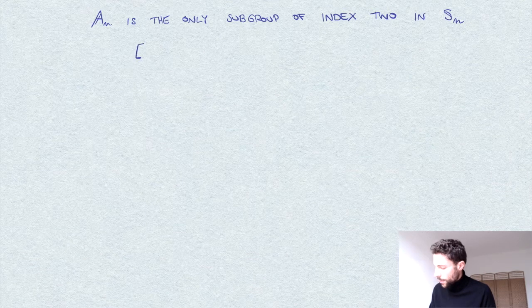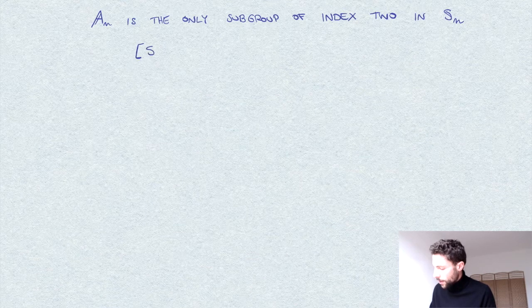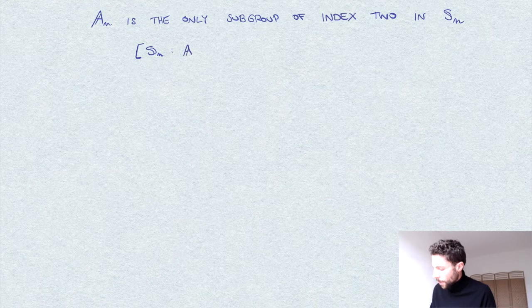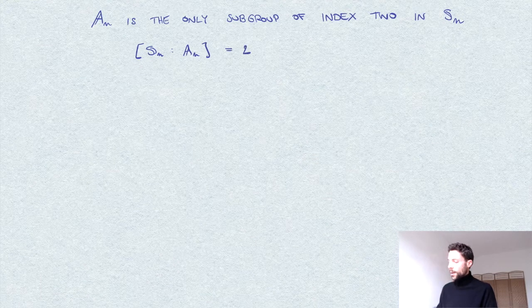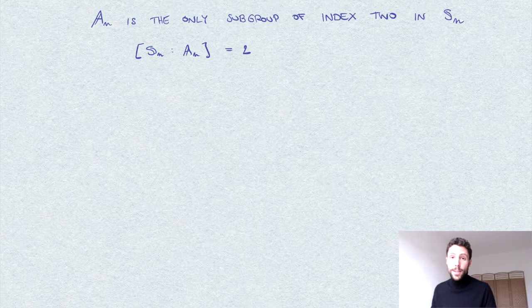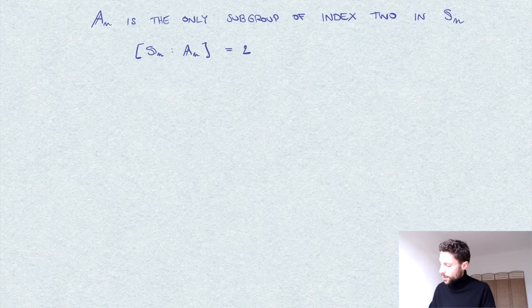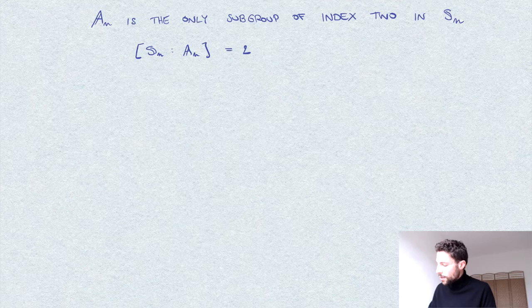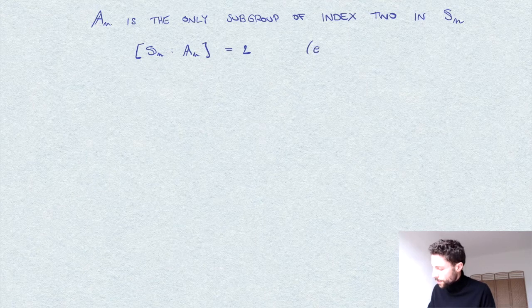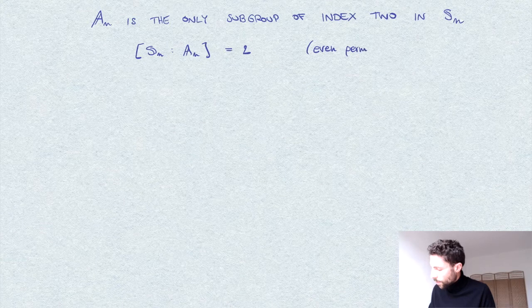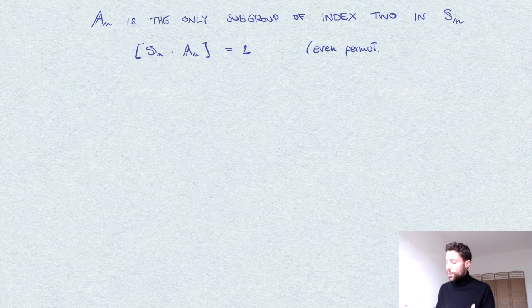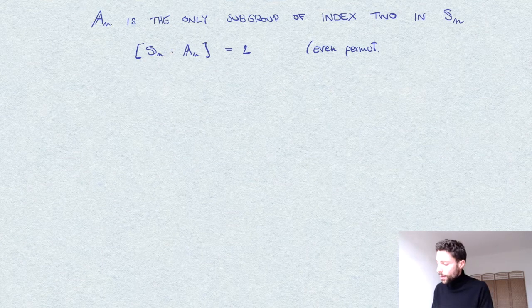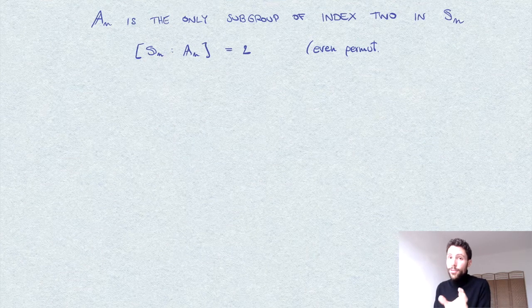It is worth recalling that clearly A_n inside S_n has indeed index two, since by definition A_n is the group of even permutations, which means permutations which can be written as a product of an even number of transpositions or inversions.